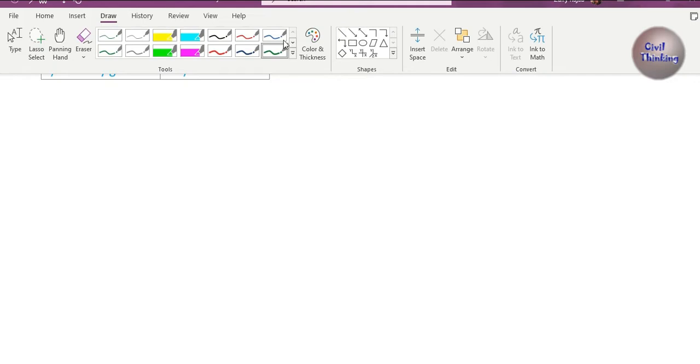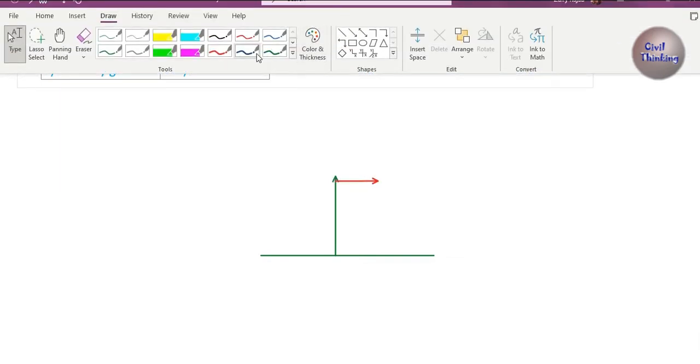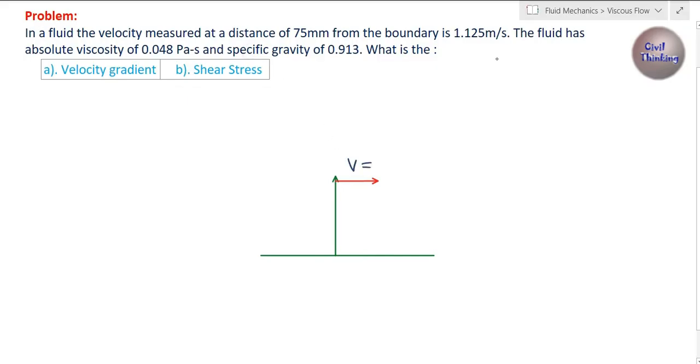Let me show you what it's saying. I will draw it. We have a boundary, assume this to be a boundary, and at a distance of 75 mm from the boundary there is a velocity of 1.125 meters per second. Let this be u, the velocity.